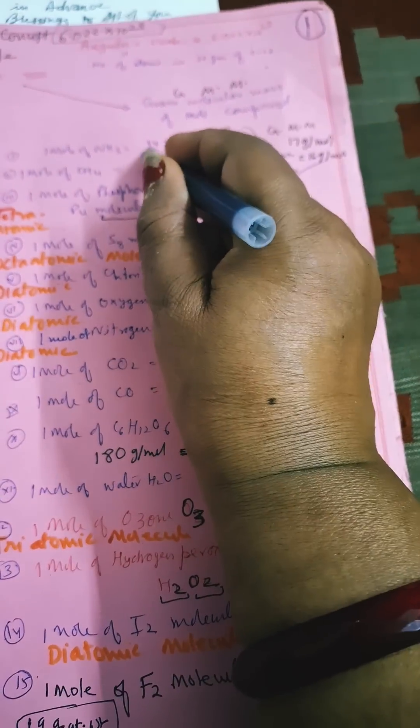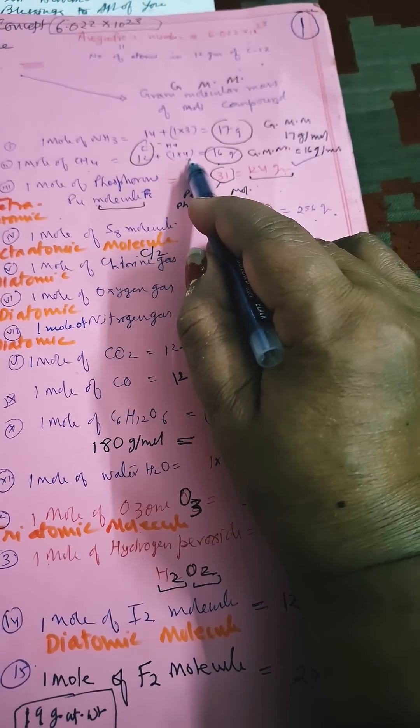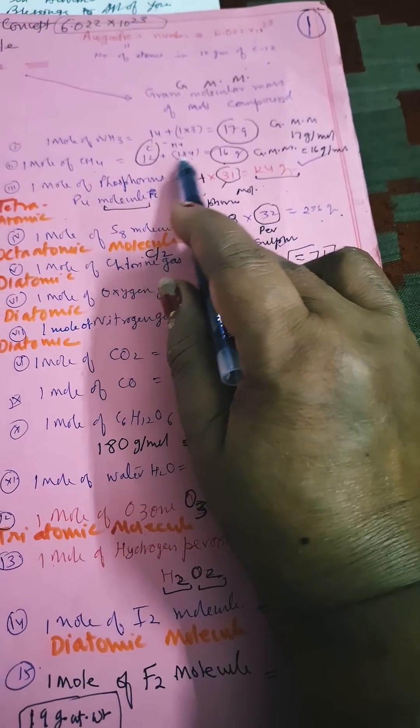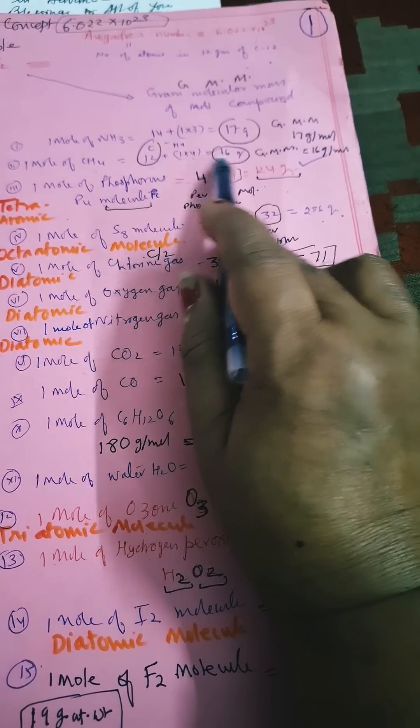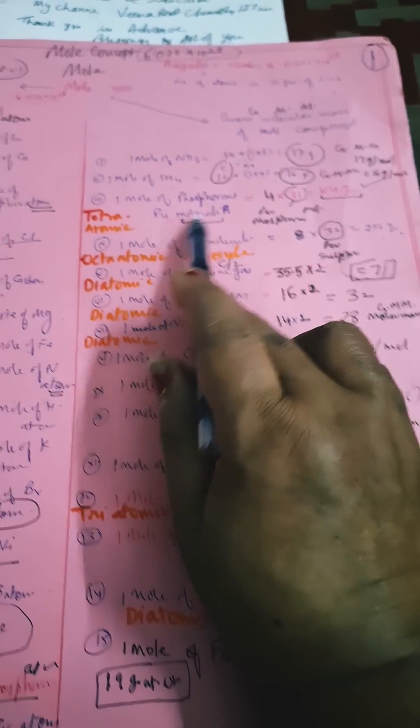Atomic mass of carbon is 12, hydrogen is 1, so 4 times here gives 12 plus 1 × 4, that is 16 for CH4. Now one mole of phosphorus, that is P4 molecule - it is tetra-atomic molecule.